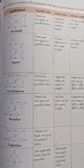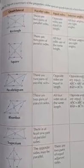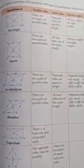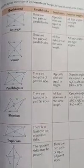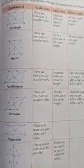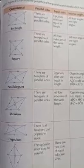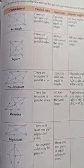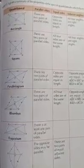Dear students, before we start Exercise 11B, it's very important that you must learn the properties of quadrilaterals. These properties are given on page 270 of your textbook D1, and you must go through all these properties before you attempt Exercise 11B. Once you have done that, then you can attempt this exercise.